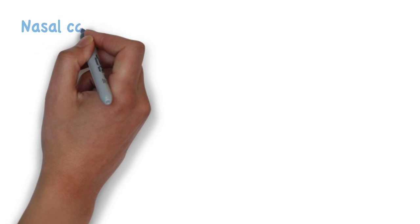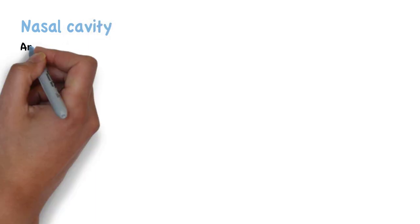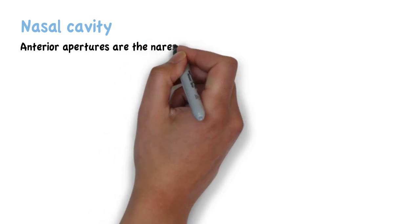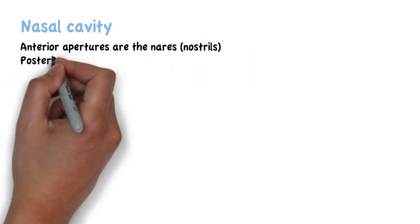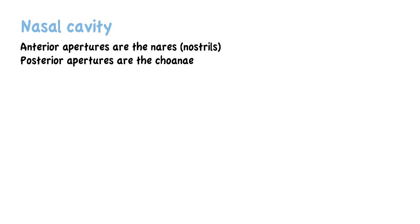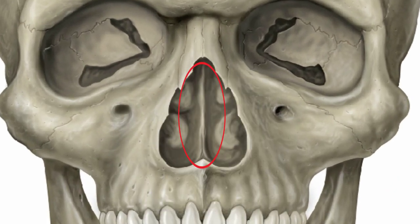The respiratory tract starts at the nasal cavity. The anterior apertures of the nasal cavity are the nares, or nostrils, and the posterior apertures, which lead to the nasopharynx, are the choanae. The cavity is separated into two by the nasal septum, which is mostly composed of cartilage.